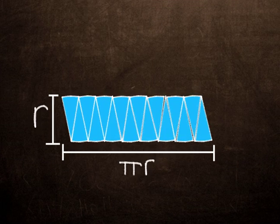And the length of the parallelogram is pi r. Therefore, when you multiply the two, you get pi r squared. Therefore, we have determined where the formula for the area of a circle is derived from.